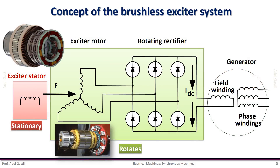This is an example of a brushless exciter system where the power is fed to the motor through a rotating transformer. An AC power is injected into the stationary exciter. This power is transferred to the exciter rotor, then rectified using a diode bridge. The rotating exciter is mounted on the same shaft as the rotor of the synchronous machine, so that the output of the rectifier can be directly fed and connected to the field winding.